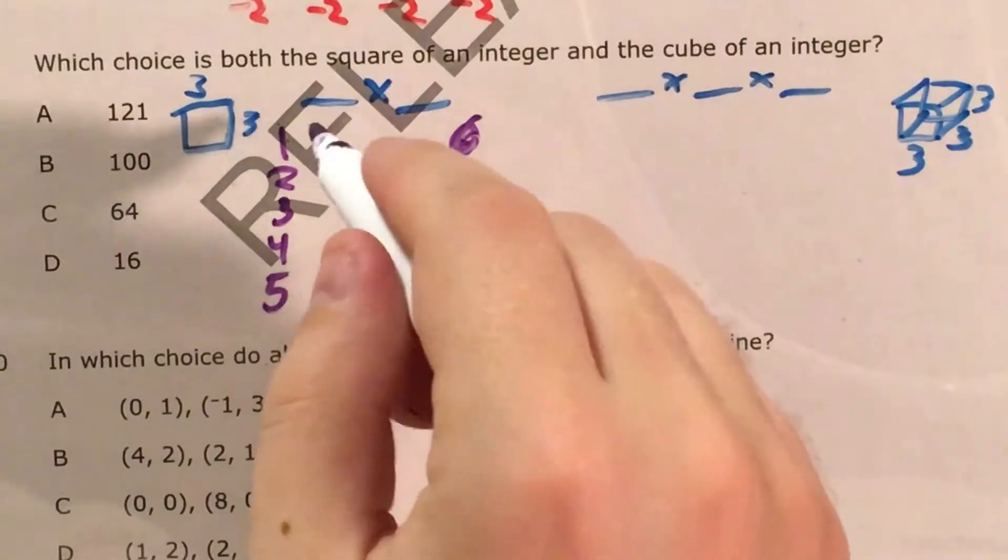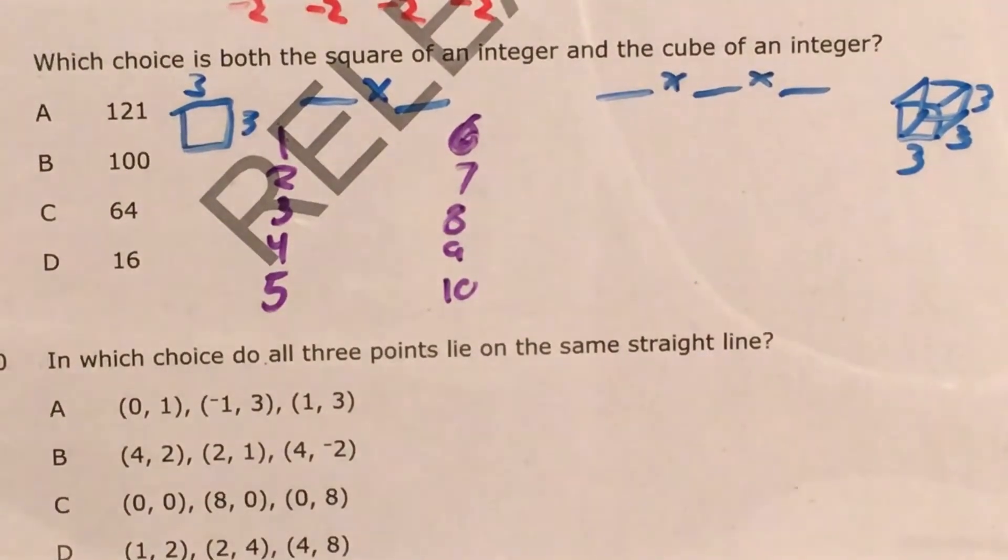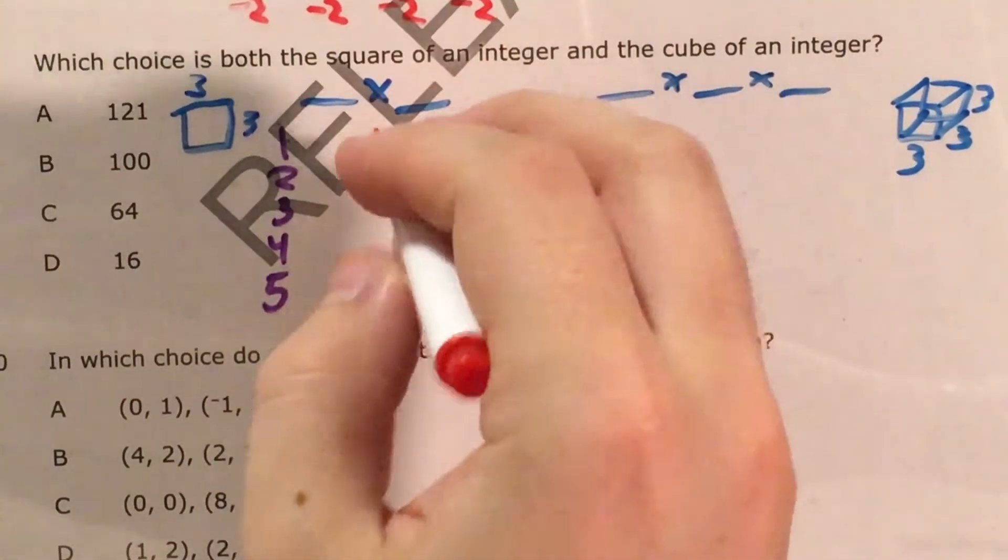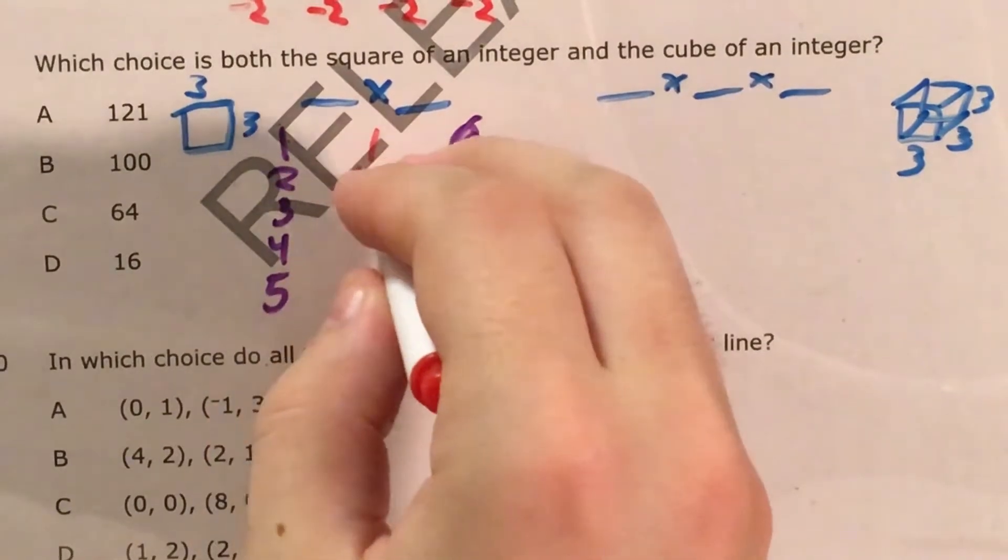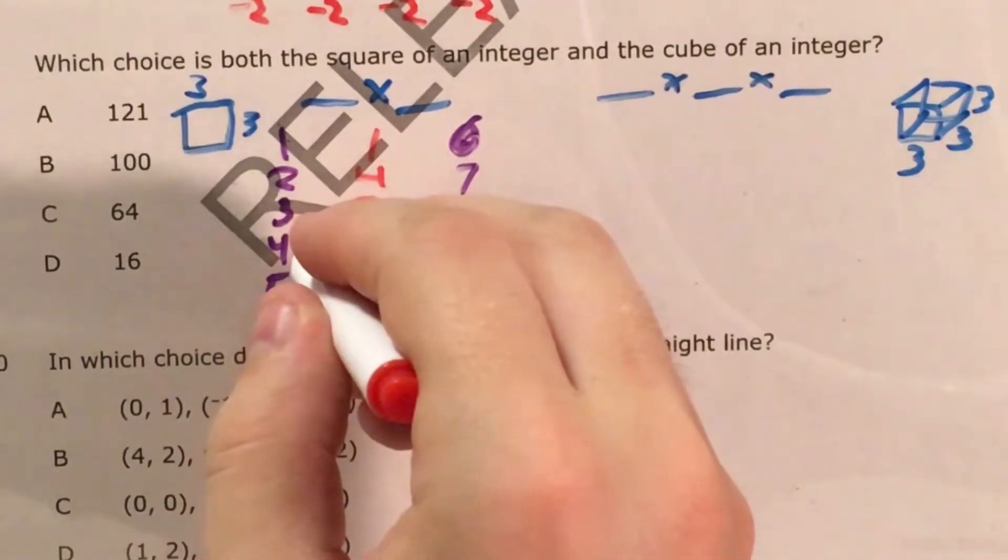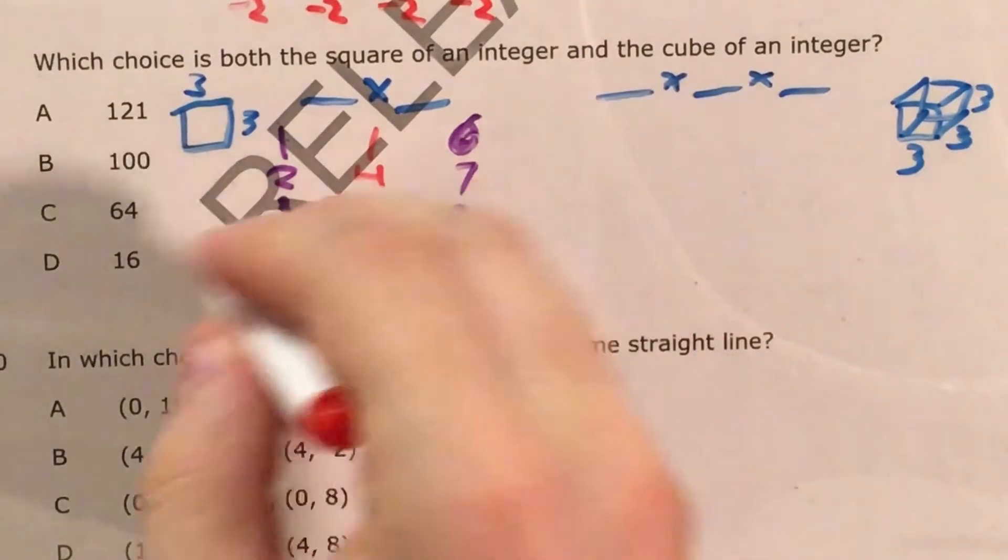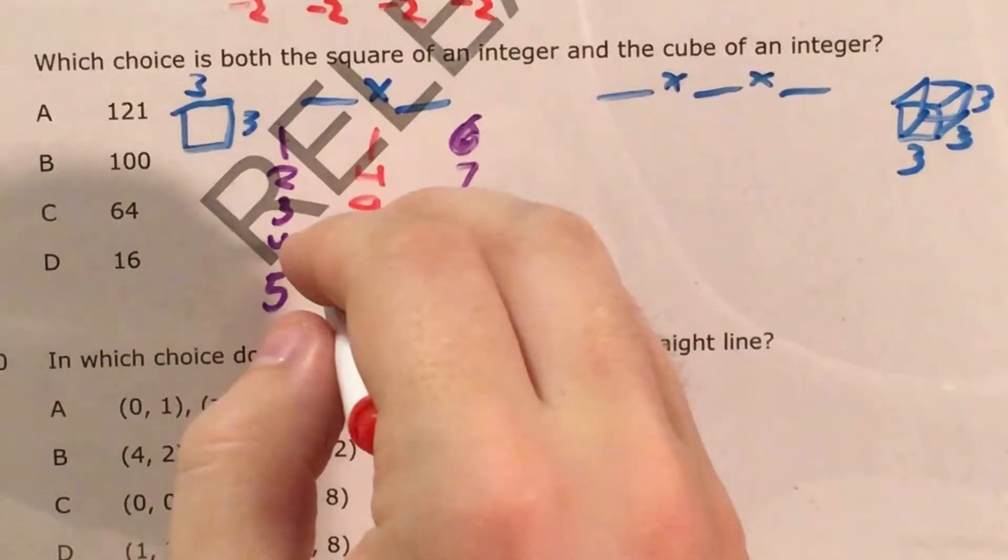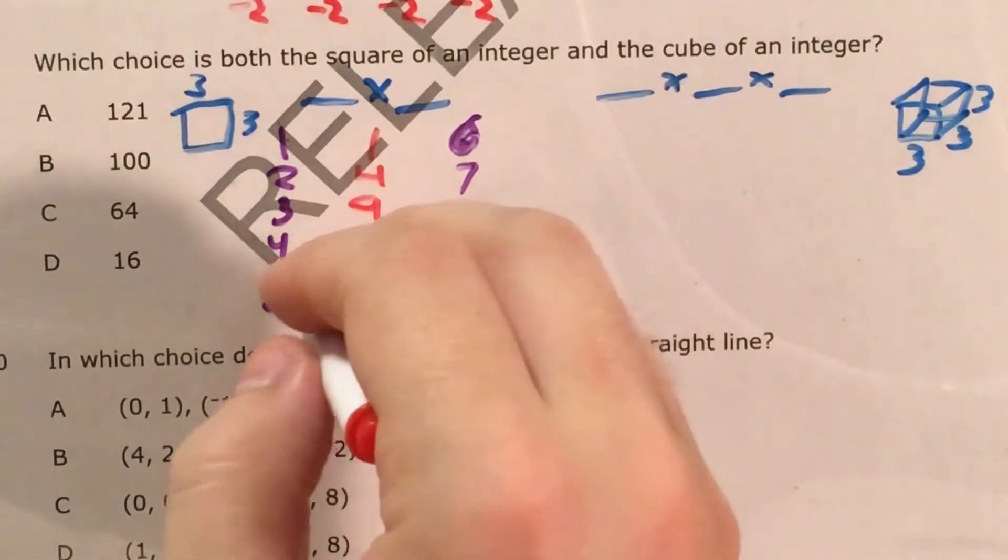If I want to find the square of 1, that's 1 times 1, which is just 1. 2 squared, 2 times 2 is 4. 3 squared, 3 times 3 is 9. 4 squared, 4 times 4 is 16. Hey, that's one of my answer choices. Just because the first one I find, though, doesn't mean it's the right answer.